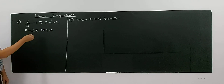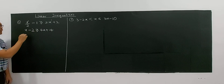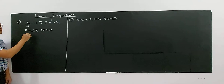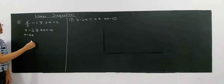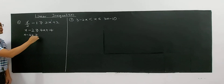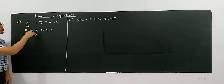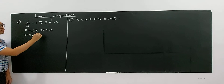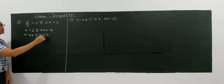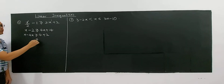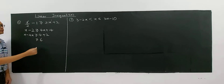So you can bring the x to the other side. So negative x minus 4x, greater or equal, and then 4 plus 2 on the other side. So you have 4 plus 2 as 6.